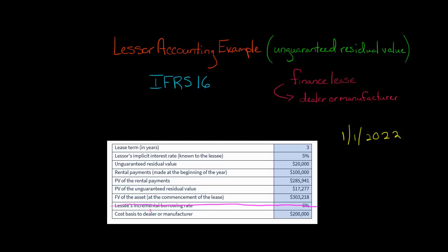We've got the cost basis to the dealer or manufacturer of $200,000. When we go to calculate sales revenue, because the residual value is unguaranteed, we're going to subtract. So instead of booking $303,218 as sales revenue, it'll be $303,218 minus the present value of the unguaranteed residual value — that'll be sales revenue. And cost of goods sold will also be $200,000 minus the present value of the unguaranteed residual value. When we did the example of the guaranteed residual value, $303,218 was sales revenue and $200,000 was cost of goods sold. But now, for sales revenue and COGS each, we have to subtract the present value of the unguaranteed residual value.